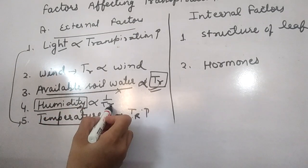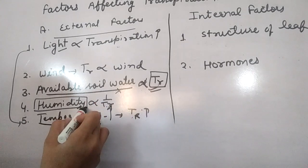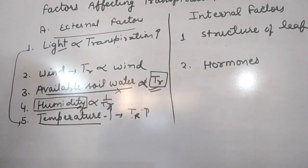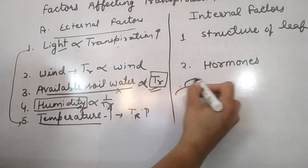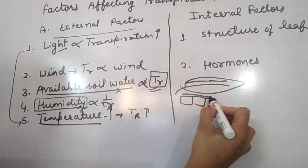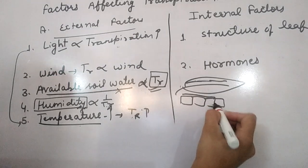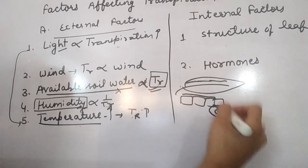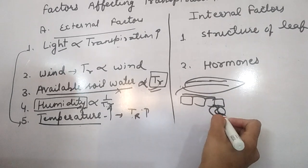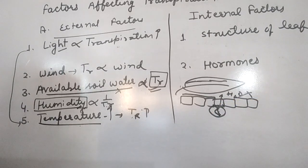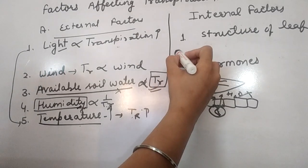When humidity is present, plant water loss to the atmosphere decreases, so transpiration rate is low. Now, internal factors: leaf structure mostly affects transpiration. If a thick cuticle is present, transpiration rate is low. If stomata are sunken — embedded below the epidermis, as in desert plants — water loss is reduced.